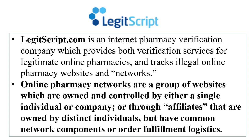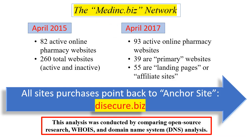This second paragraph of the affidavit basically consolidates the effort showing groups of websites essentially owned and controlled by a single individual or company, with different arms called affiliates. It's a very organized, methodical, and process-driven type of business model, even though it is illegal. They were able to identify by commonalities this medinc.biz network. The affidavit lays out that in April of 2015, there were 82 active online pharmacies tied to this network, with a total of 260 sites both active and inactive.